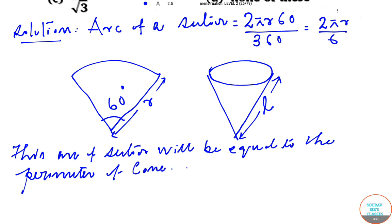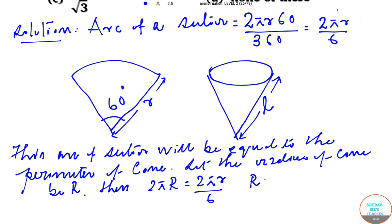Let the radius of cone be small r. Then 2 pi small r is equal to 2 pi big R by 6, so small r is equal to big R by 6.